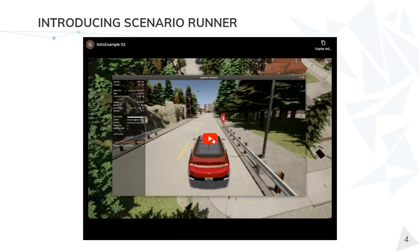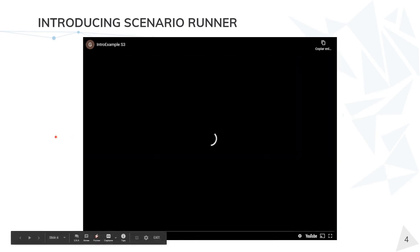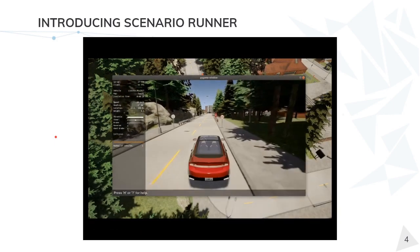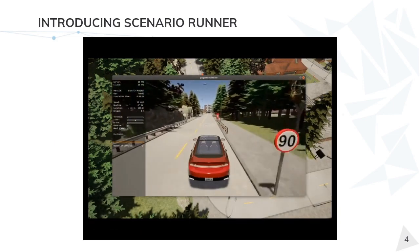This situation can be seen here, and it's the one implemented in Scenario Runner, but in this case we have substituted the deer for a pedestrian crossing the road.